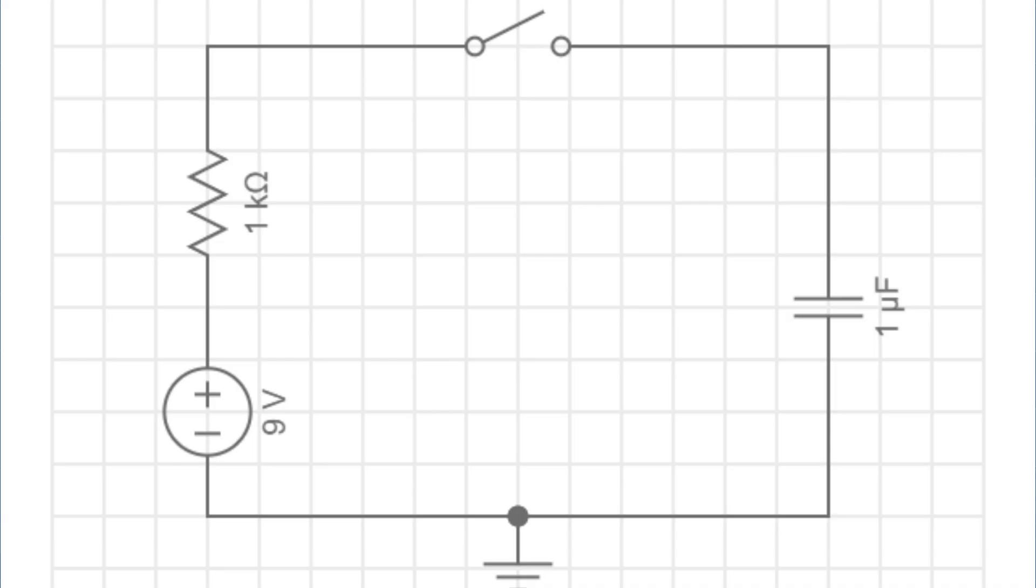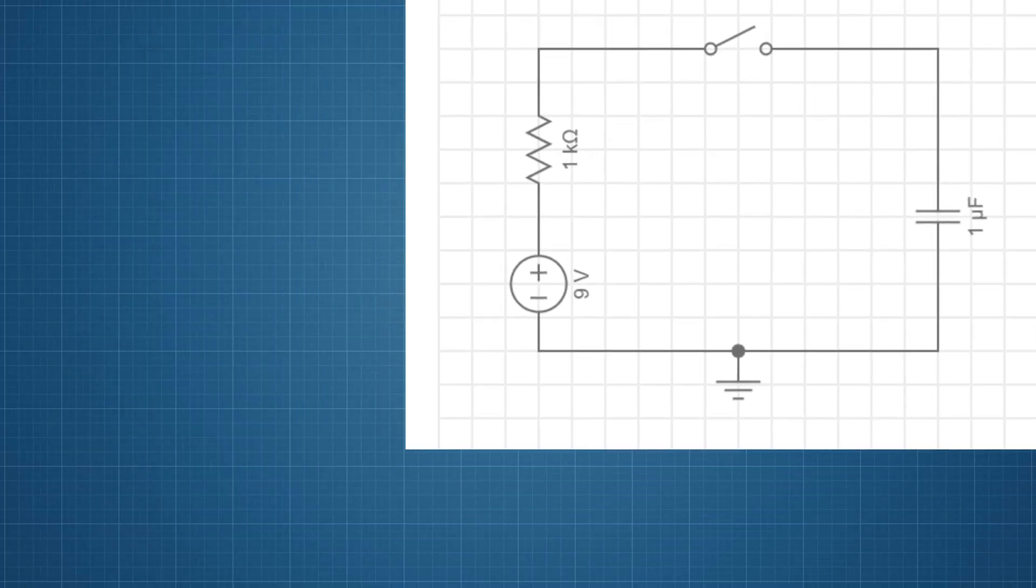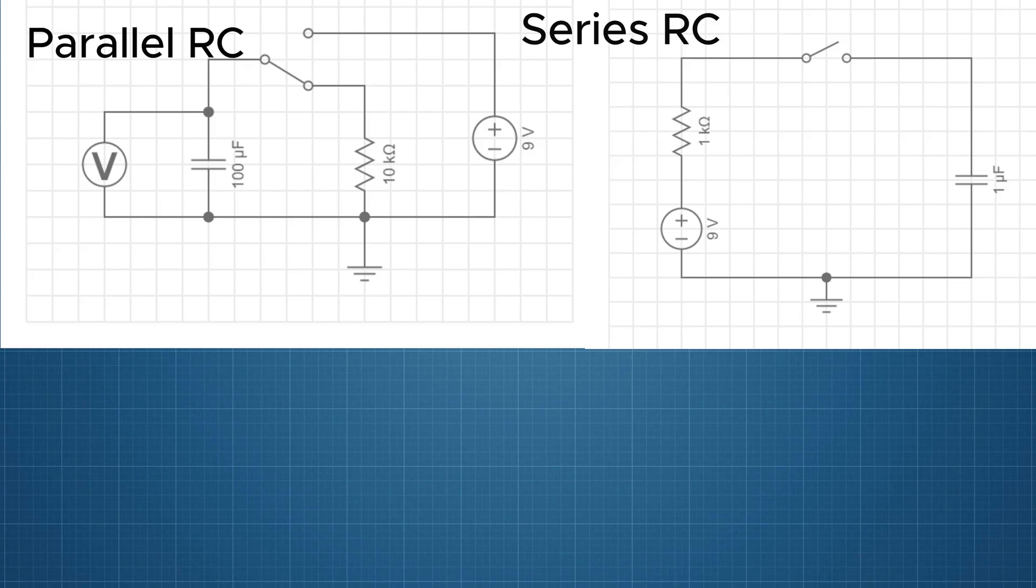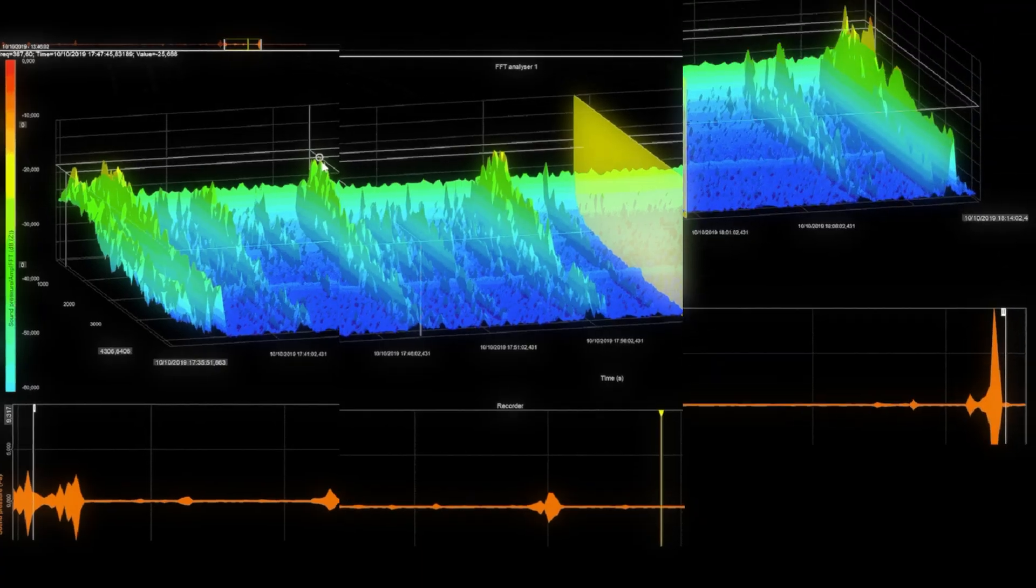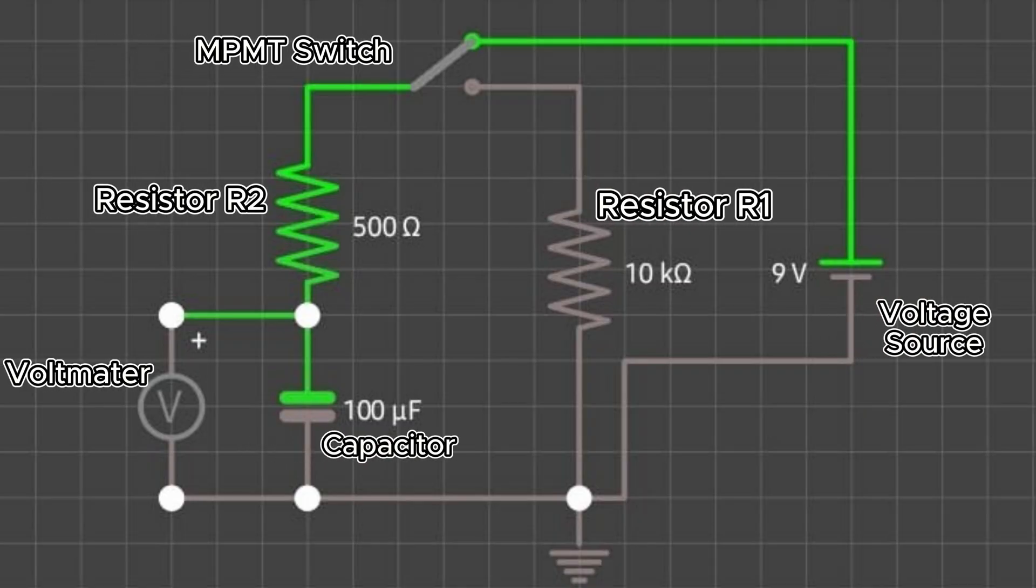An RC circuit combines a resistor and a capacitor in series or parallel. These circuits are fundamental in electronics, often used for timing, filtering, and signal processing. In today's video, we'll focus on a series RC circuit and observe how the capacitor charges and discharges.